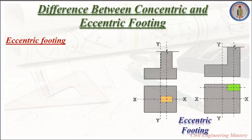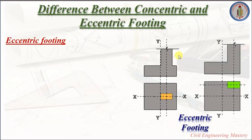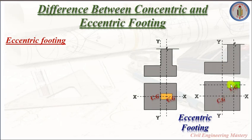Next, let us discuss eccentric footing. Here, the center of gravity of the footing and the center of gravity of the column are not coinciding. In this case, the center of gravity of the footing and the center of gravity of the column are both not coinciding. This case of footing we call an eccentric footing.